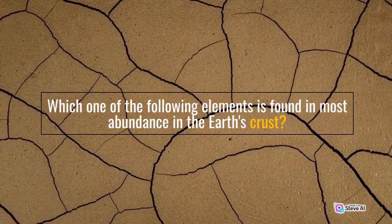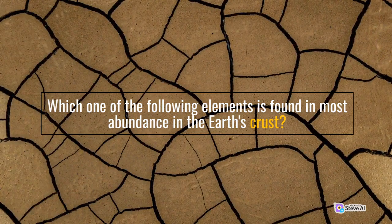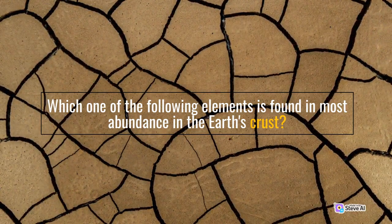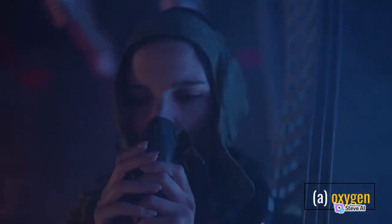Which one of the following elements is found in most abundance in the Earth's crust? Answer: A — oxygen.